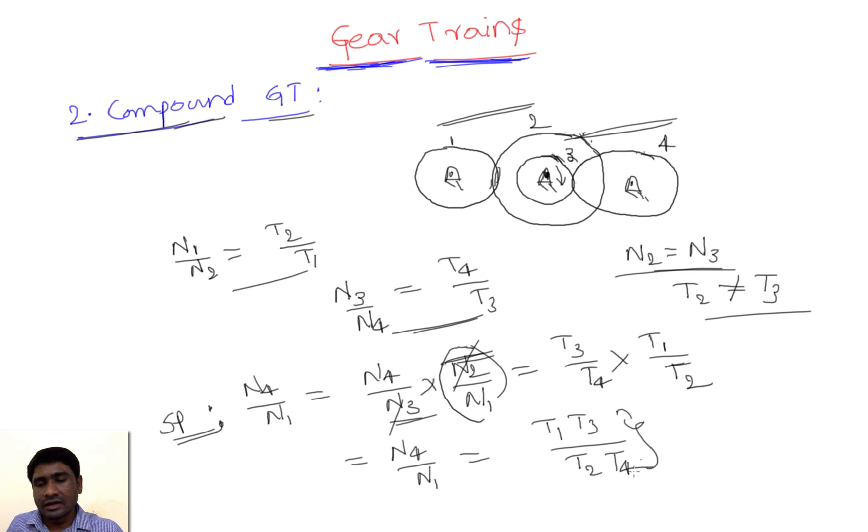There is no idle gear present in this setup. If you observe further, the numerator is the multiplication of all driver teeth, and the denominator is the multiplication of all driven teeth.